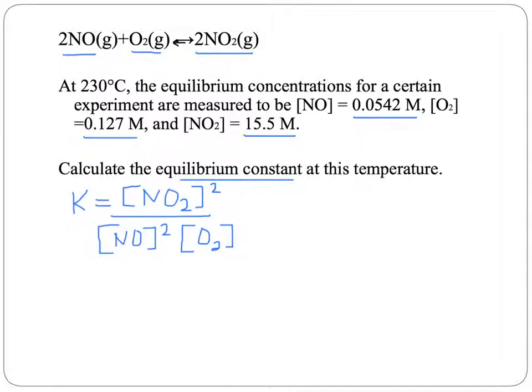So to fill in the numbers then, now that we've set up the equation, the concentration of the nitrogen dioxide is 15.5 molarity, and we have to square that.